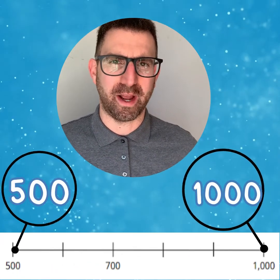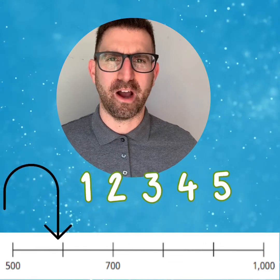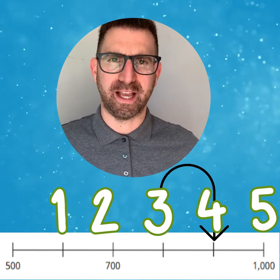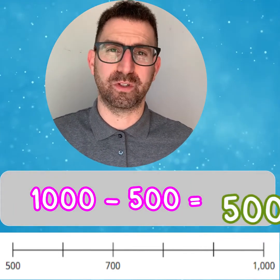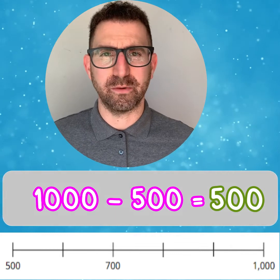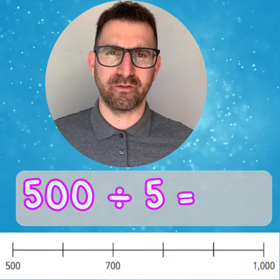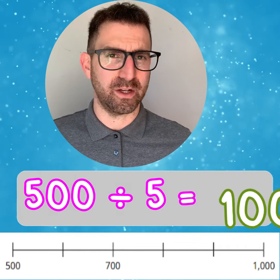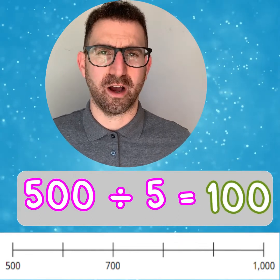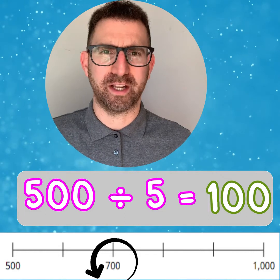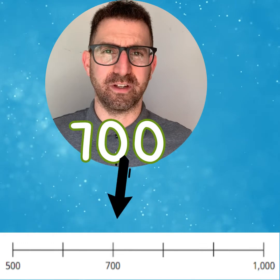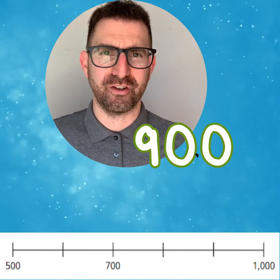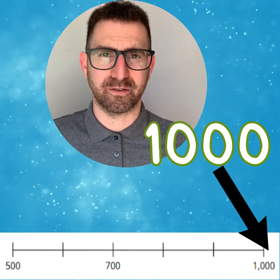This number line is very different because it does not start with 0 but still ends with 1000. There are 5 intervals. First, work out the difference between the end and the first number. In this case, 1000 take away 500 equals 500. Now we can do a division calculation: 500 divided by 5 intervals equals 100. So each interval should be worth 100, and we can check with the second interval which is 700. 600, 700, 800, 900 and 1000. It works.